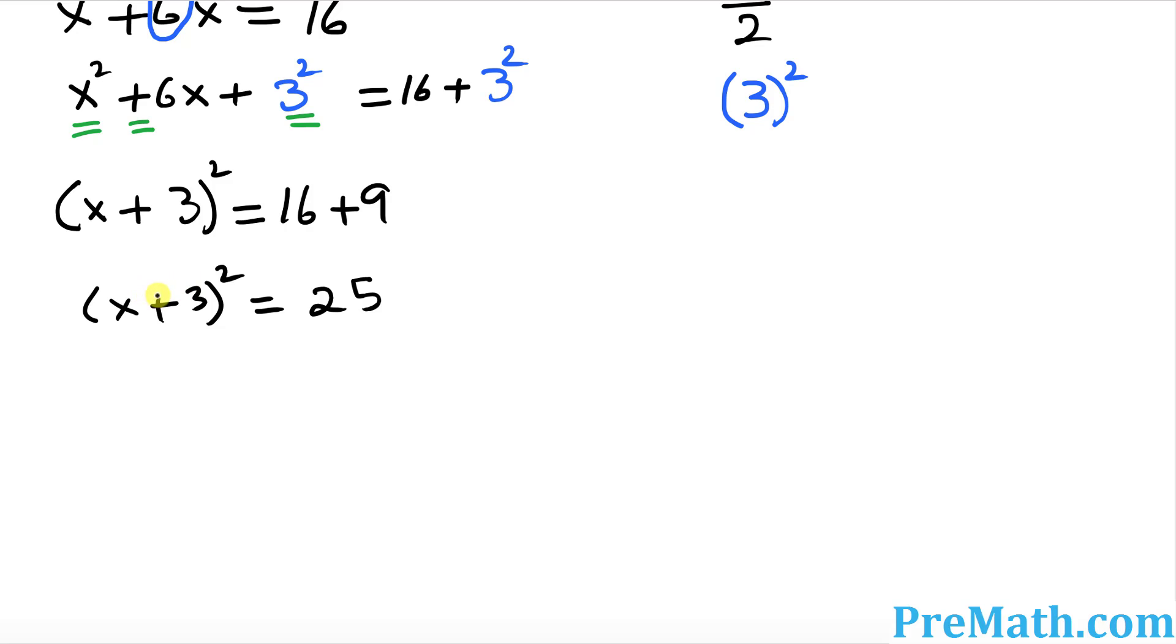Since we want to solve for x we must get rid of this square. You can undo the square by taking the square root. So I'm gonna take the square root on this side and the square root on this side, and don't forget to put plus or minus sign. This square and square root undo each other. So we get x plus 3 equals the square root of 25, which is positive and negative 5.